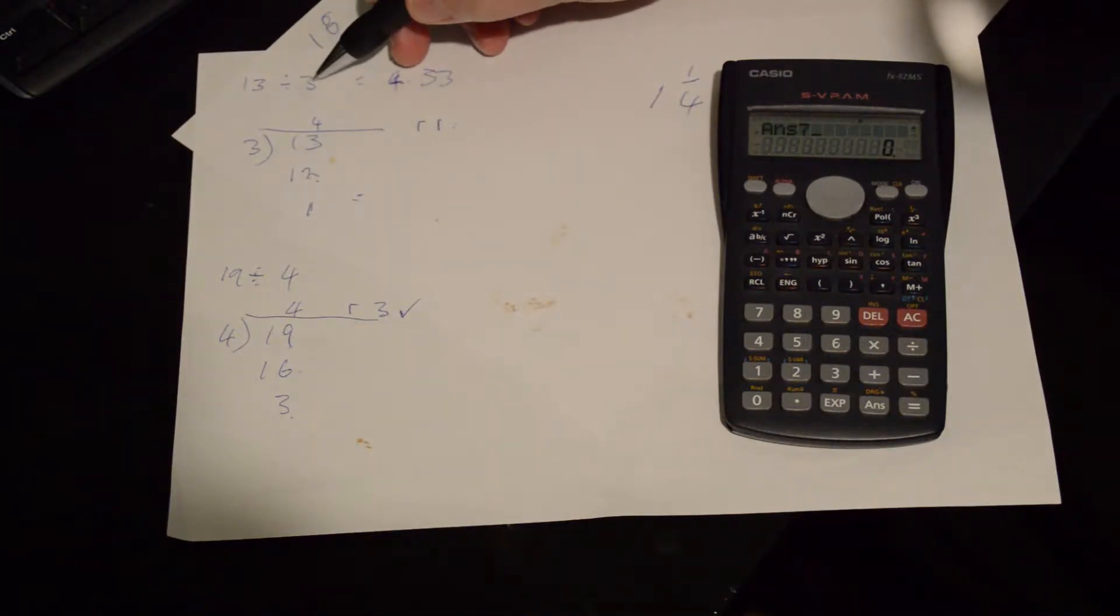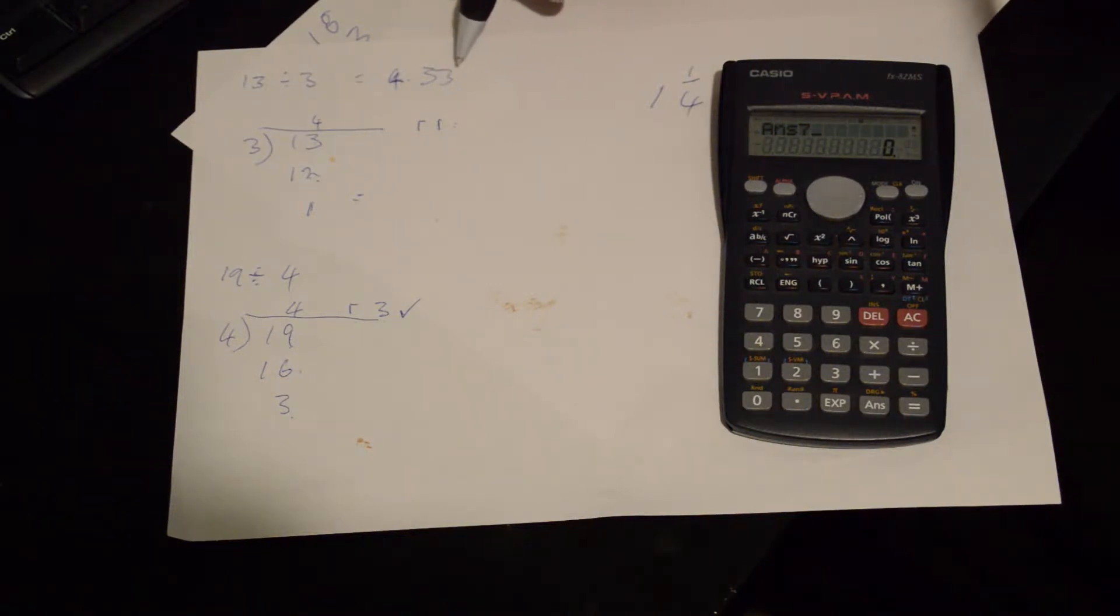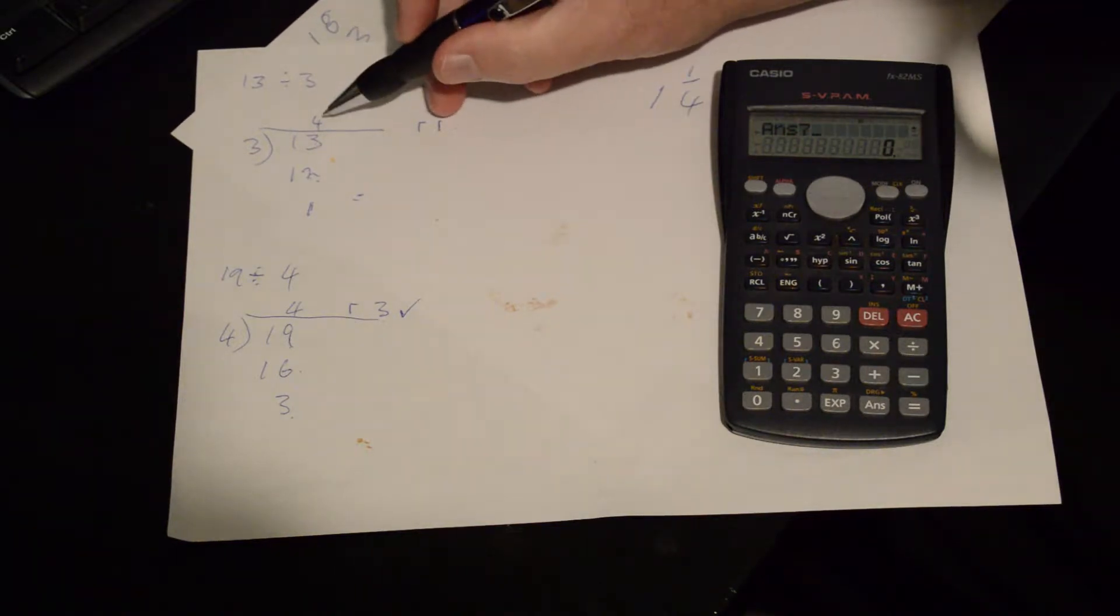You've got 13 divided by 3 and the answer is 4.333 repeat. Okay, so if we do it the way that you've been doing it,